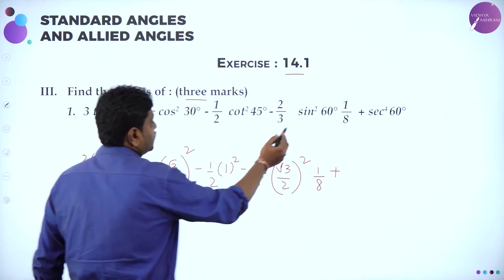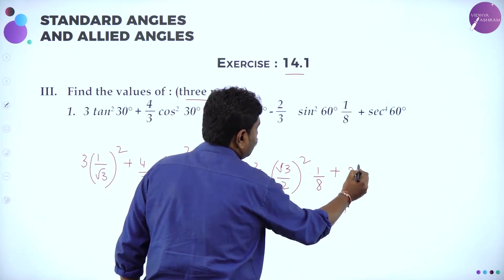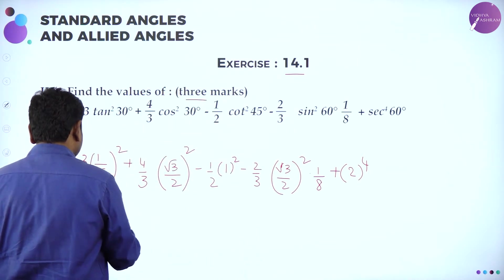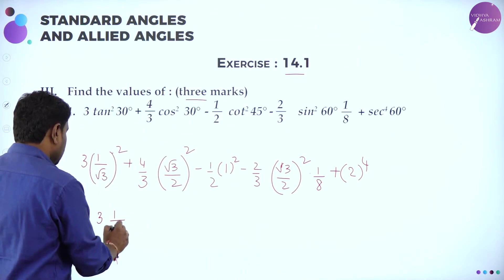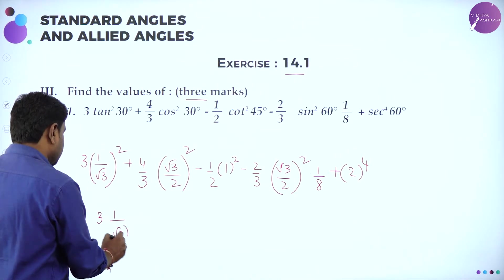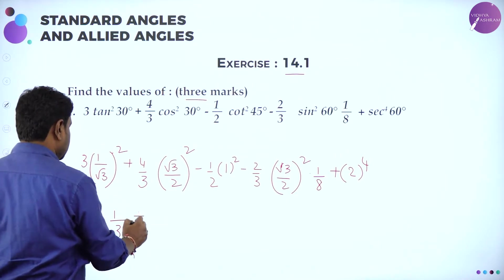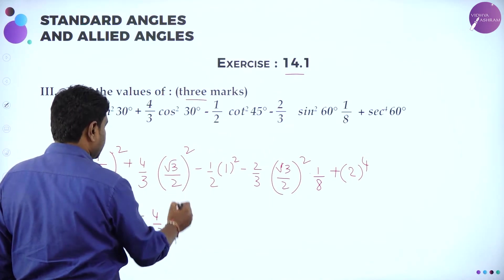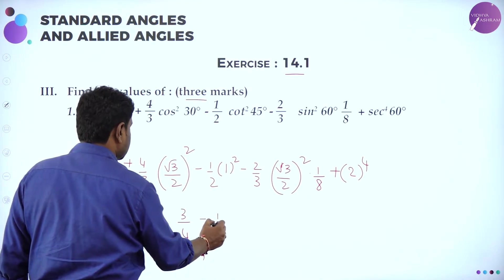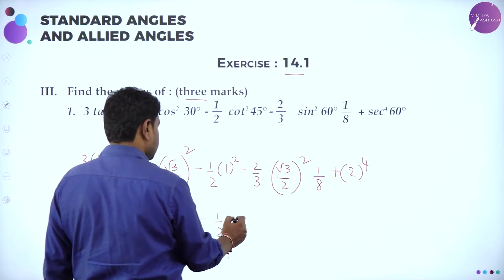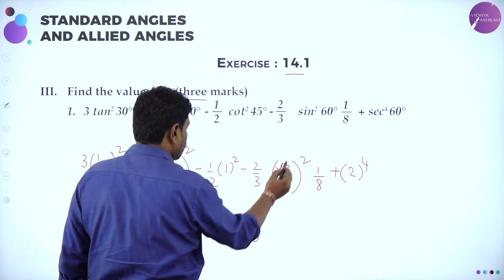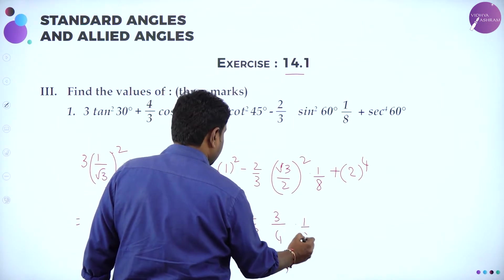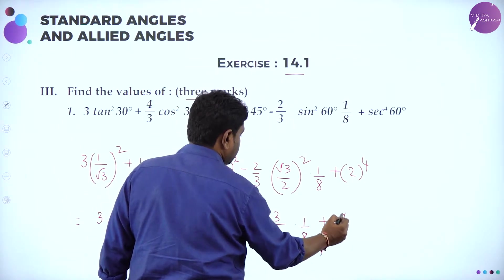So sec 60 = 2, and we need 2 to the power 4. Now further simplifying: 3 × (1/√3)² = 3 × (1/3) = 1. Plus (4/3) × (√3/2)²: (√3)² = 3, 2² = 4, so that gives (4/3) × (3/4) = 1. Minus (1/2) × 1. Minus (2/3) × (3/4) × (1/8) plus 2⁴ = 16.